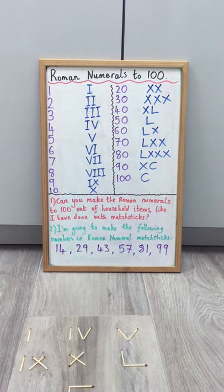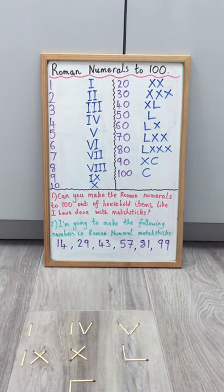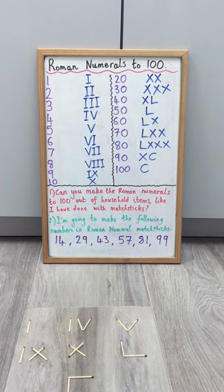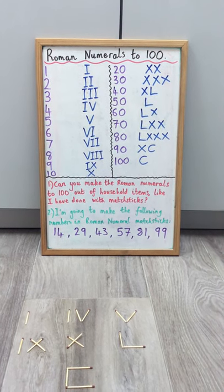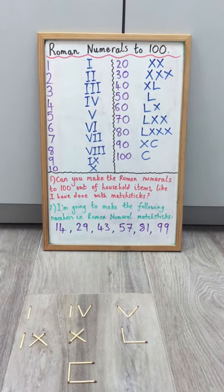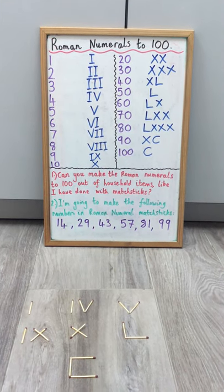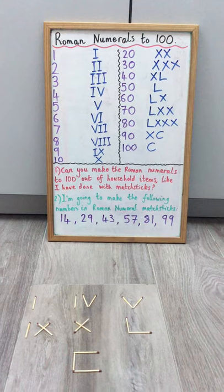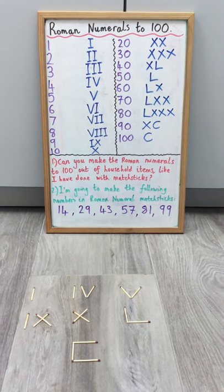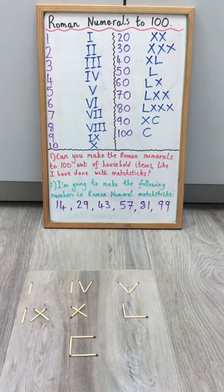Now just before we go I'm going to try and make some more numbers in Roman numeral matchsticks. So the numbers I've just decided to try to make are these purple ones at the bottom: 14, 29, 43, 57, 81 and 99 and I'm going to try and talk you through those as I do them.